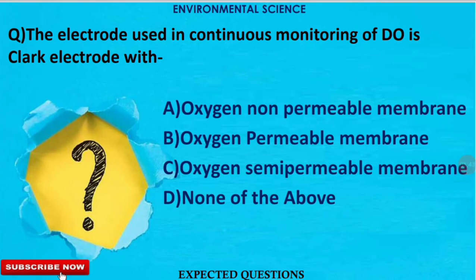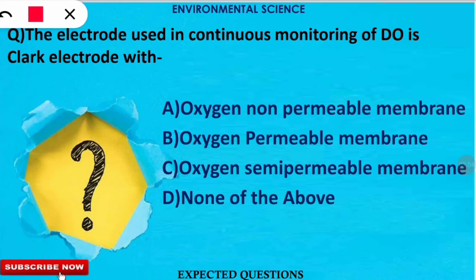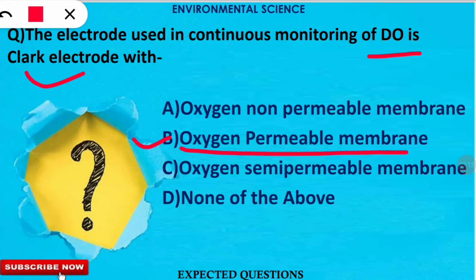The next question is: the electrode used in continuous monitoring of dissolved oxygen is called the Clark electrode — with which kind of membrane is it used? The correct option is B — an oxygen-permeable membrane is used for measuring the dissolved oxygen concentration of a liquid.